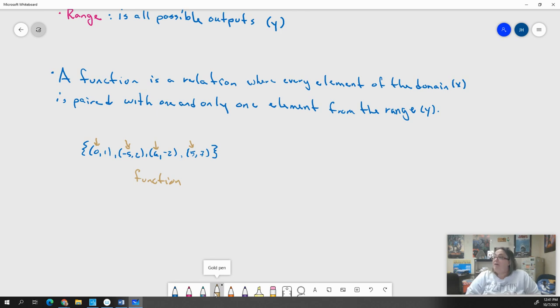Because what does it say? It says for every element of the domain X, it's paired with one and only one element from the range Y. So as long as I have all different X values, I know I've got a function. And I could write this in a couple of forms. This is a set of ordered pairs, but I could also write it as a table. I could go X, Y, I had 0, 1, negative 5, 2, 6, negative 2, 5, 7. And I could just look down. Are any of my Xs the same? No? Yes, it's a function. Don't worry about it. I can double up on Ys. Like if all of these were 2, it would still be a function as long as all of my Xs were different.